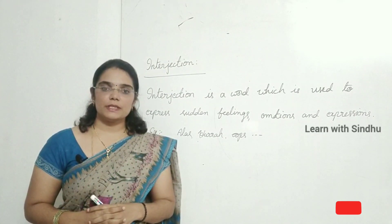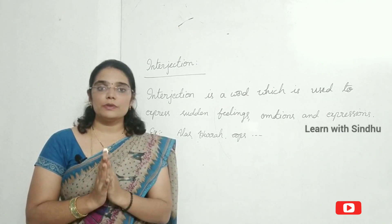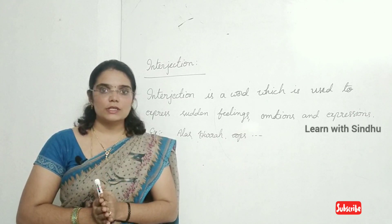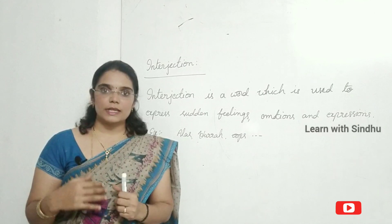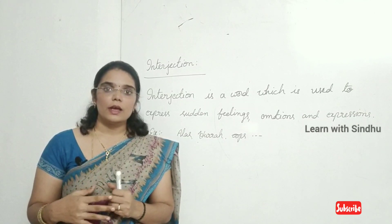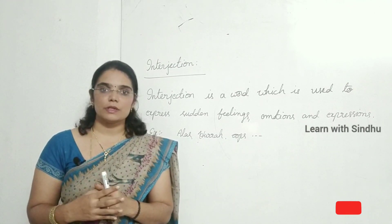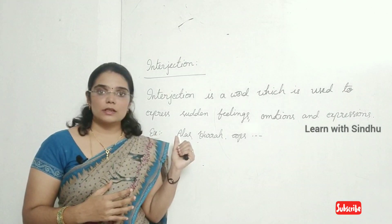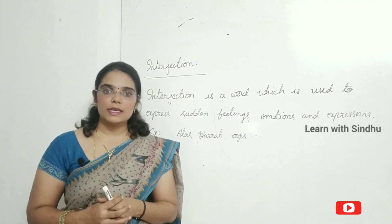The last part of speech is interjection. An interjection is the word which we use to express our sudden feelings, emotions, and expressions — like surprise, happiness, joy, or anger. The words we use to express these sudden feelings are called interjections. Examples of interjections are: alas, hurrah, oops.